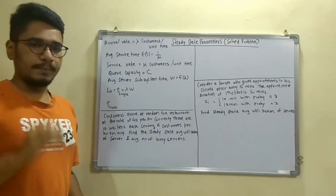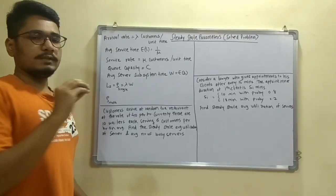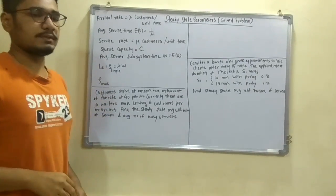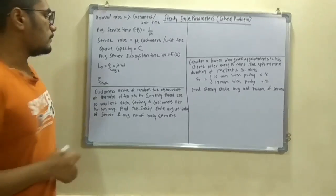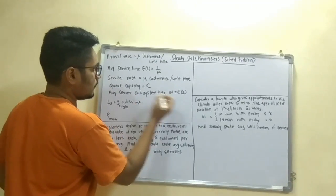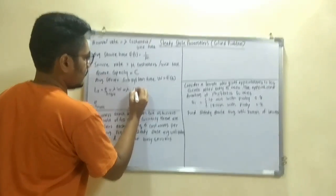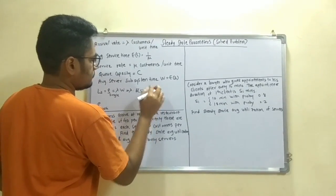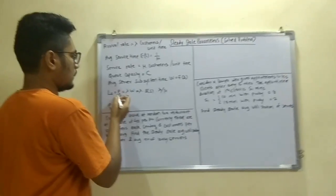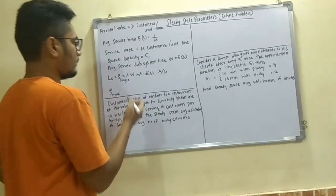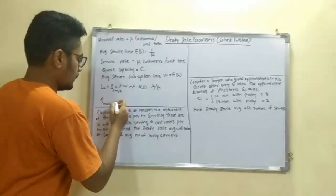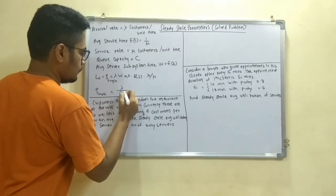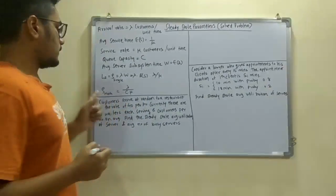And then we have some parameters called the steady state parameters. Now there are two types of queuing systems, like the single server and multi server. For single server queuing system it would be lambda w, so it is lambda into w, that is ES, and the value of ES is 1 by mu, so it would be lambda by mu. For a multi server queuing system one parameter would be added to this, that is 1 by C into mu, where C would be the capacity of the system.